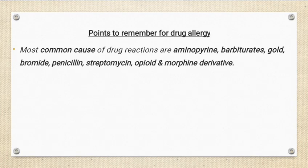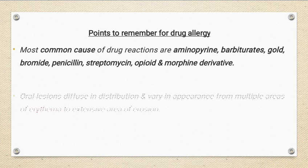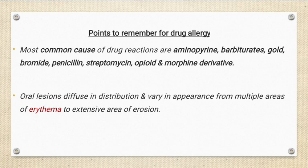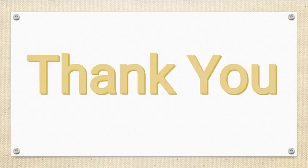Points to remember: be familiar with the drugs that can cause drug allergy when taking history from a patient, such as barbiturates, aminopyrine, promide, and penicillin. Oral lesions are diffuse in distribution and can vary in appearance — vesicles, bullae, erythematous lesions, edema, extended erosive or ulcerative lesions. Thank you, and stay tuned for the next lecture.